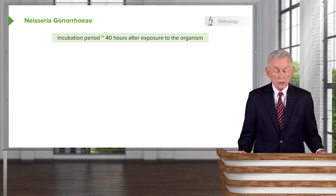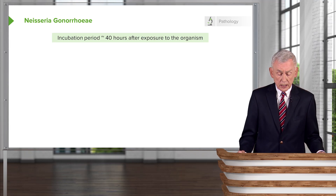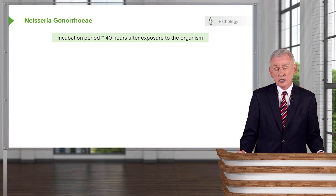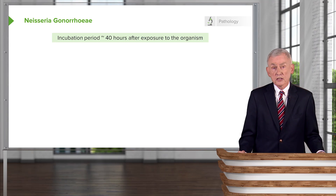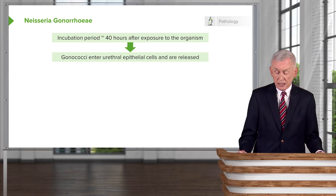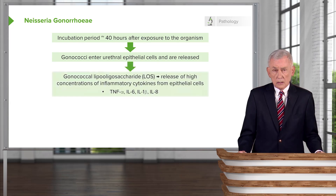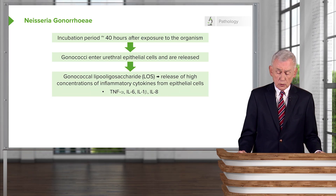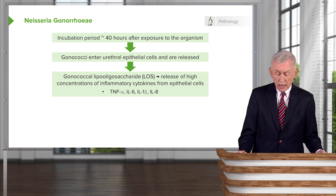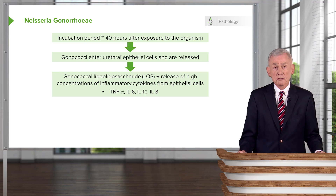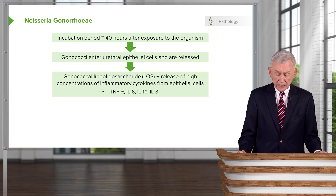Let's turn now to Neisseria gonorrhoeae and talk about the incubation period. It's actually pretty short — approximately 48 hours after exposure, this organism will begin its dirty work. The gonococci actually enter the urethral epithelial cells and kill many of them, and then the organisms are released again. Neisseria gonorrhoeae has something called lipo-oligosaccharide, and this lipo-oligosaccharide causes the release of very high concentrations of inflammatory cytokines from the epithelial cells as they're dying.